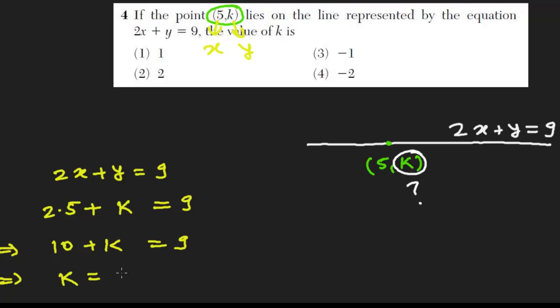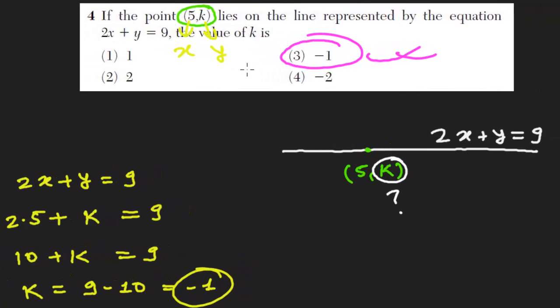In the next step I can say that k equals 9 minus 10 equals -1. So here our answer is -1. The best choice among these four is -1, so the value of k is -1. This is how you need to solve.